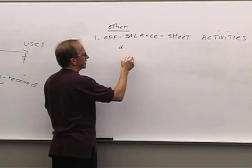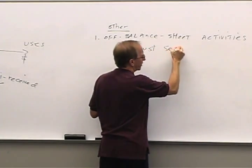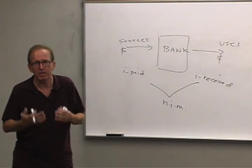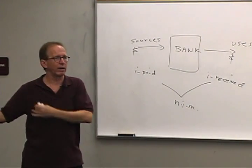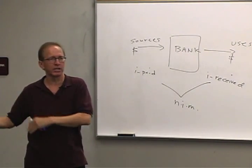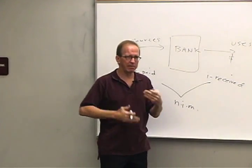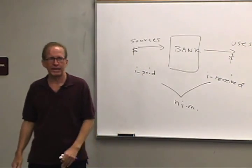One off-balance sheet service is trust services, sometimes called private banking. What banks do for certain customers — not most of us, but wealthy ones — is manage money for them. For example, if you're fairly wealthy, you could go to a bank and say, 'I've got a million dollars and I'd like to leave it to my kids or grandkids, or some charities, and rather than manage all this money myself, I'd like you to take over management of it.'